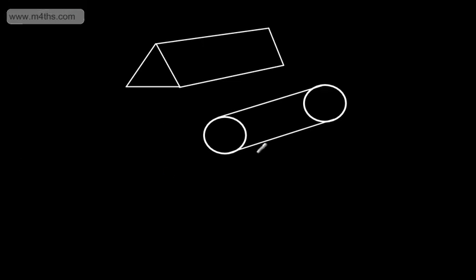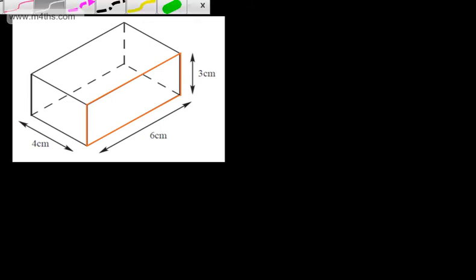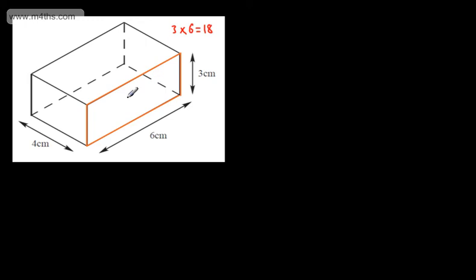When we're talking about the volume, we're talking about the space trapped inside these solid shapes — the amount of space in them. Let's work out the volume of this particular prism. This is a cuboid. All we need to do to find the volume is find the area of one of the cross-sections and multiply it by the length. We've got a rectangular cross-section: a 3 by 6 cm rectangle. 3 times 6 is 18, so the area of this cross-section is 18 cm squared.